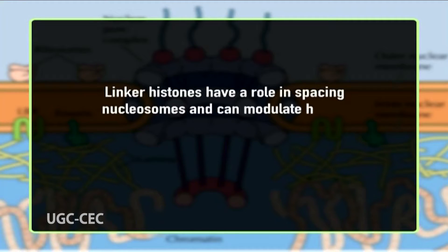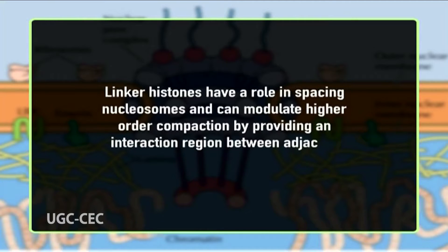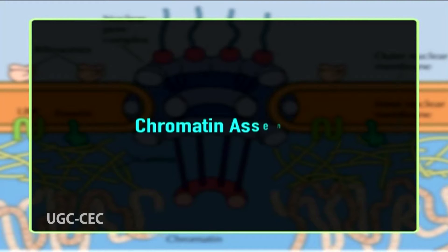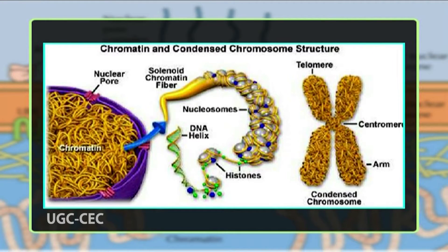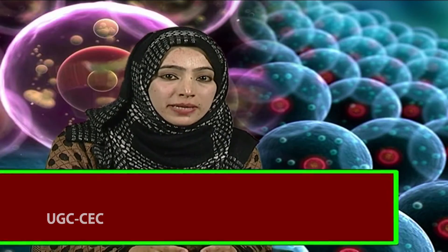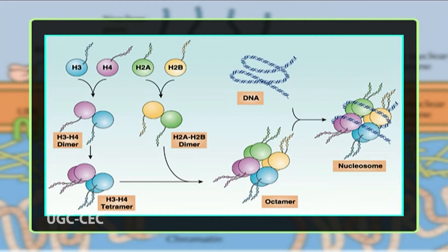Linker histones have a role in spacing nucleosomes and can modulate higher-order compaction by providing an interaction region between adjacent nucleosomes. The assembly of DNA into chromatin begins with the formation of the nucleosome. The first step is the deposition of a tetramer of newly synthesized H3-H4 to form a subnucleosome particle, followed by the addition of two H2A-H2B dimers, producing a nucleosomal core particle consisting of 146 base pairs of DNA bound around the histone octamer.